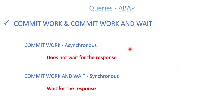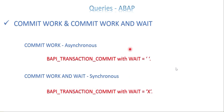Now, BAPI transaction commit can act as both commit work and commit work and wait — meaning it can work as either an asynchronous or synchronous process depending on your need. When the input parameter called wait is empty, BAPI transaction commit works as an asynchronous process. When you pass the value 'X' to the wait parameter, it works as a synchronous process.